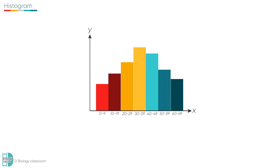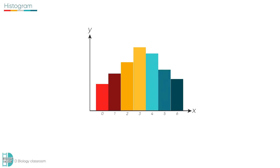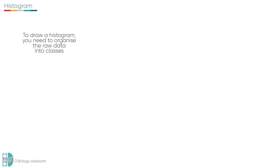A histogram is drawn for continuous data that is subdivided into classes. For example, body weight of a species of animal in a population. Sometimes the intervals can be whole numbers — for example, the number of seeds in a type of fruit. When you want to draw a histogram, the raw data needs to be organized into classes. The number of classes largely depends on the type and nature of the data.